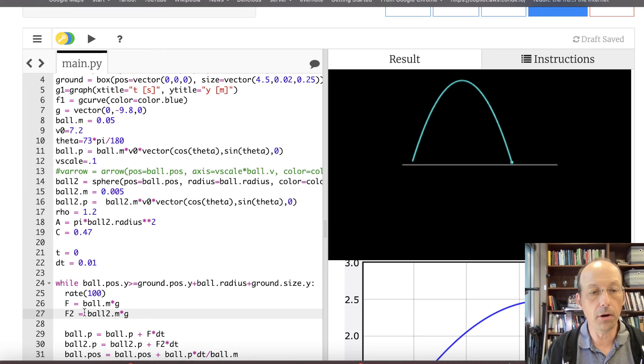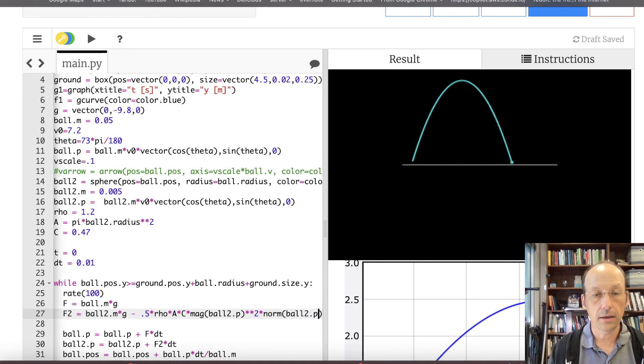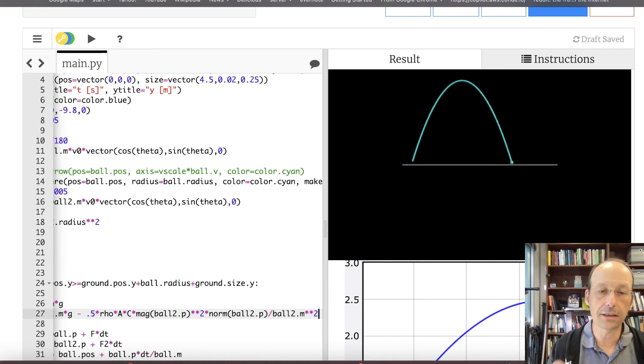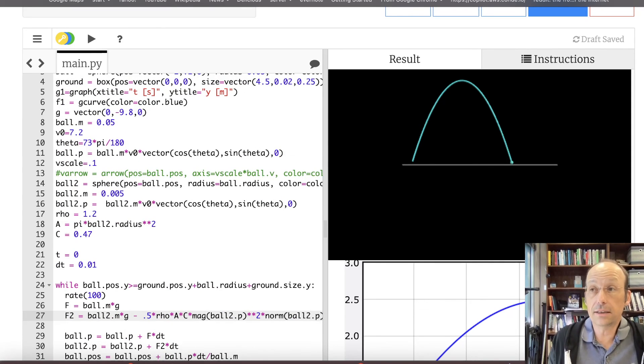So now down here I have the force on the ball, just the gravitational force. I'm going to add in my calculation. Negative 0.5 times rho times A times C times the magnitude of ball2 dot P squared times norm ball2 dot P divided by ball2 dot M squared. Because I need the velocity. So I'm going to take the magnitude of the momentum and divide by the mass of ball2 squared to get the velocity. That's it. That's all I need to do.